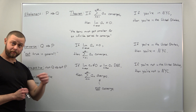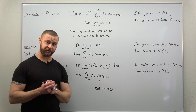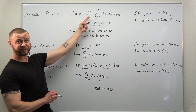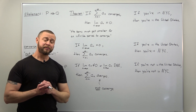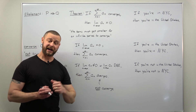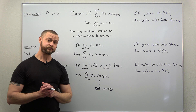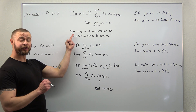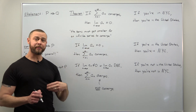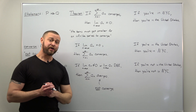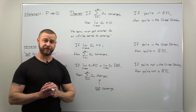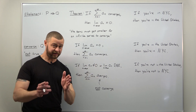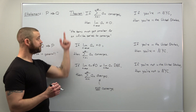The theorem that leads us to the divergence test states: if an infinite series converges, then the limit of its terms must equal zero. At an intuitive level that makes sense — if an infinite series is going to converge, the terms have to gradually get smaller and approach zero. If the terms get bigger, there's no way the series would converge.